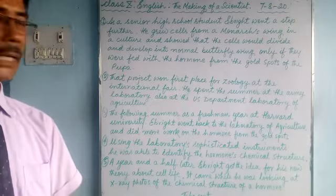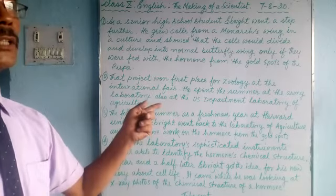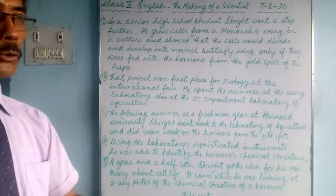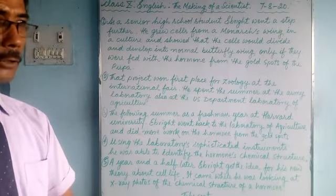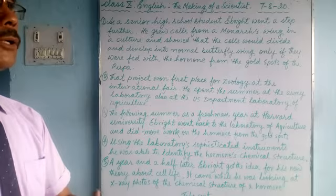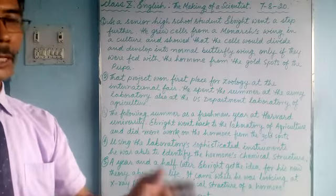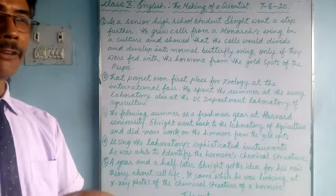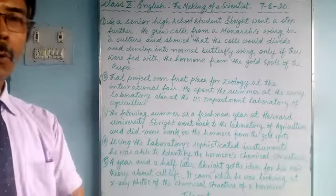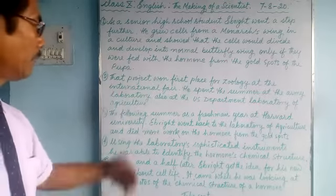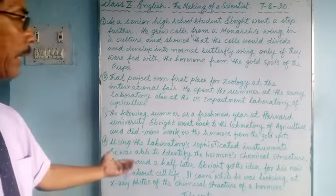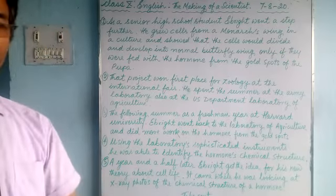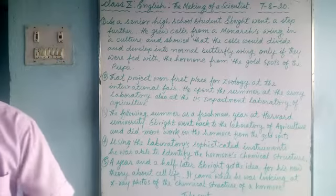That's all for today. To summarize: during junior high school, he discovered the insect hormone from the gold spot; as a senior high school student, he grew cells in a culture — a tissue culture — fed them with the insect hormone, and a full wing was grown. Then as a freshman at Harvard University, he got the chance to study the theory of cell life. We will continue in the next class. Thank you for watching.